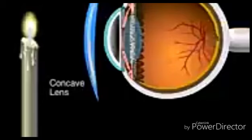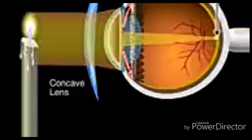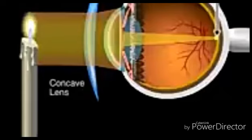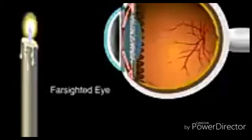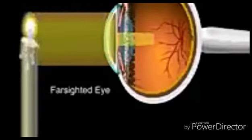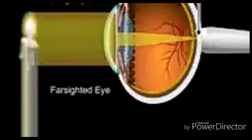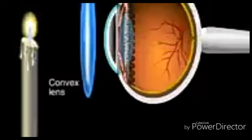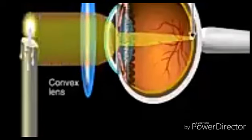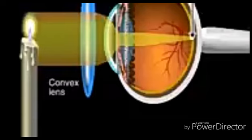Glasses with concave lenses can correct nearsightedness. The lens widens the plane of light coming through the cornea, which pushes the focal point back onto the retina. Farsightedness is just the opposite — the eye's length is too short. When that happens, the focal point is behind the retina, so it's difficult to see things that are up close. Glasses with convex lenses narrow the plane of light, moving the focal point back onto the retina and correcting farsightedness.